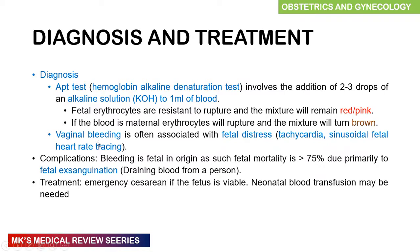There may be vaginal bleeding with associated fetal distress — tachycardia, sinusoidal fetal heart tracing, or bradycardia. Complications include fetal-origin bleeding leading to fetal mortality, and fetal exsanguination where blood is completely drained from the fetus. Whenever this diagnosis is made, an emergency cesarean section is always indicated if the fetus is viable, and the neonate may require blood transfusion.